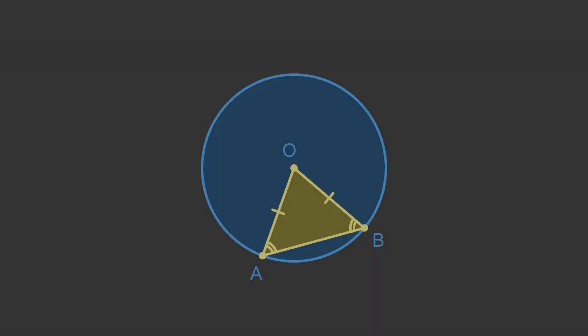The two radii theorem is a rule that tells us that any triangle made from two radii of a circle is an isosceles triangle.